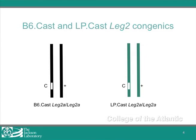I used statistics to explain the mode of inheritance, how penetrant it is, and what the effect size is. To do this, we developed two strains of mice that are congenic for the LEG2 allele. What we did was back-cross carriers of this gene variation against what are called a recipient strain for ten generations.